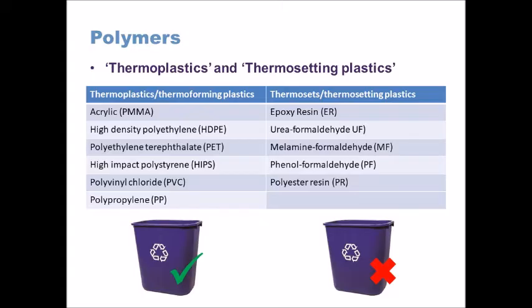The key difference between thermoplastics and thermosets is that thermosetting plastics, once initially molded — often through compression molding — form rigid cross bonds inside their structure. This means they can't be changed again by heat, so you can't melt them down and recycle them into new products.